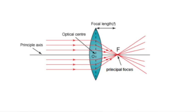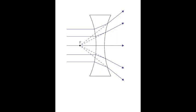The light is converged to a point, and this point is called the principal focus. So when a parallel beam of light rays passes through a convex lens, these light rays will be converged to a point called the principal focus, and the distance between the principal focus and the center of the lens is called the focal length. The power of a convex lens is expressed in positive values.